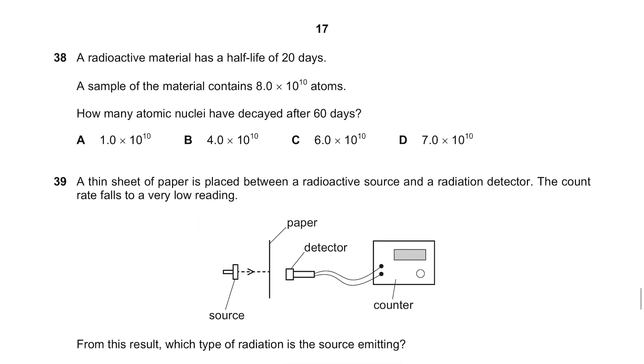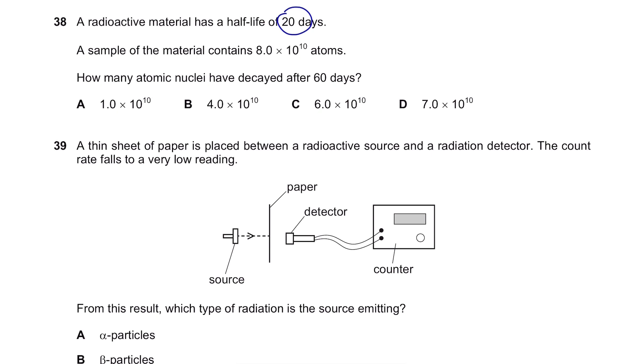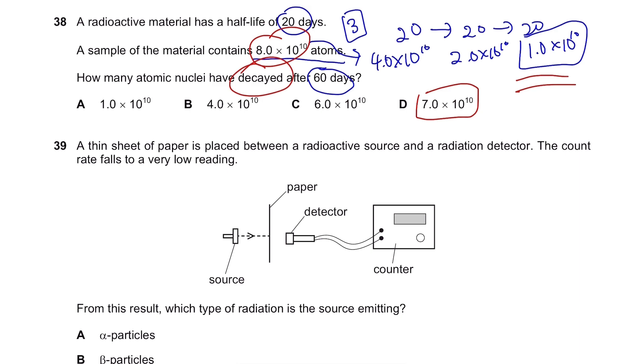Question 38. A radioactive material has a half-life of 20 days. A sample of the material contains 8.0 times 10 to the power of 10 atoms. How many atomic nuclei have decayed after 60 days? So, 20 days, another 20 days and another 20 days makes it 60 days. So, you can see that you went through 3 half-lives. First, you had 8.0 times 10 to the power of 10. Then, after 20 days, you'll have 4.0 times 10 to the power of 10. Then, 2.0 times 10 to the power of 10. Then, 1.0 times 10 to the power of 10. This is all you're left with and they asked how many have decayed after 60 days. So, since you first had 8.0 times 10 to the power of 10, if you minus this, you'll have 7.0 times 10 to the power of 10 decayed after 60 days.